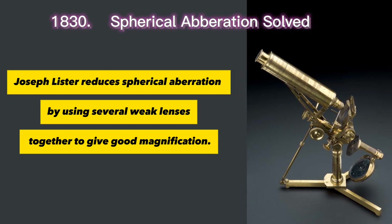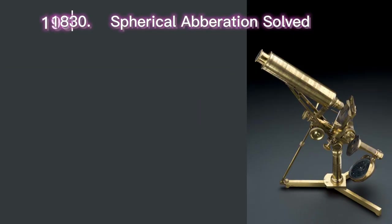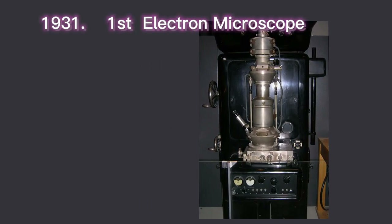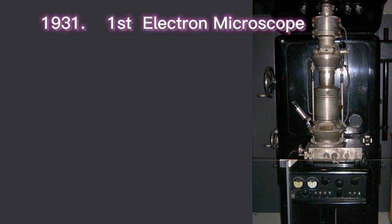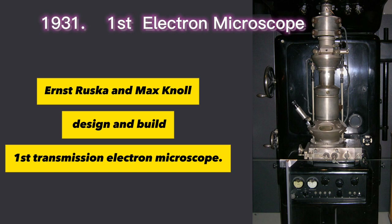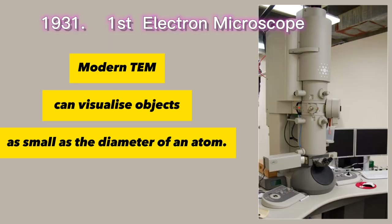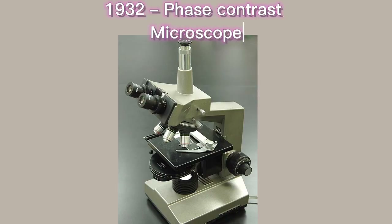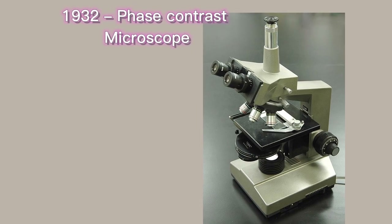In 1931, Ernst Ruska and Max Knoll designed and built the first transmission electron microscope. Modern transmission electron microscopes can visualize objects as small as the diameter of an atom.